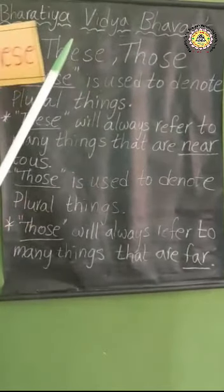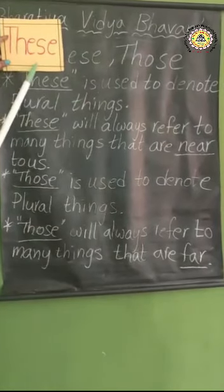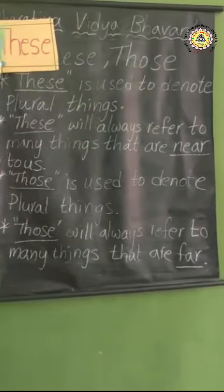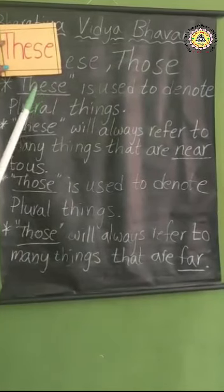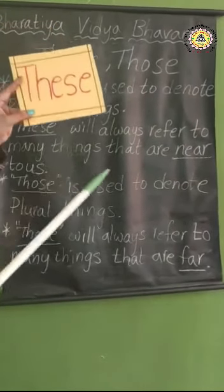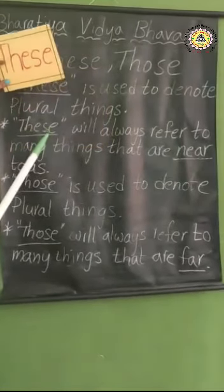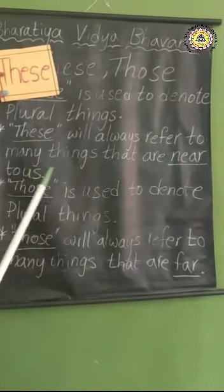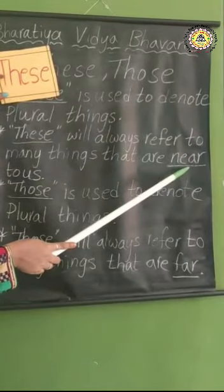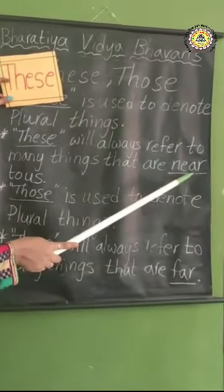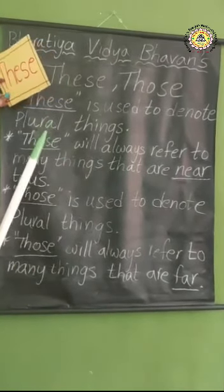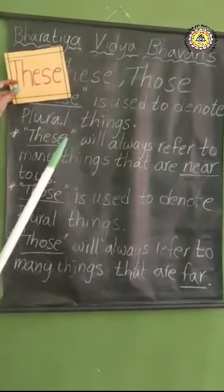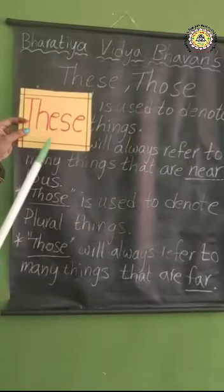Let us see some points about 'these' and 'those', children. First: 'these' is used to denote plural things. As I explained, if one thing is there we use 'this'; more than one thing, we use 'these'. For example, these are pens. 'These' will always refer to many things that are near to us. The keyword is 'near'. If one thing is near, use 'this'; more than one thing near, use 'these'.